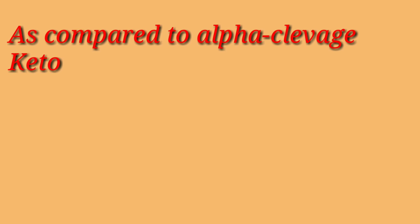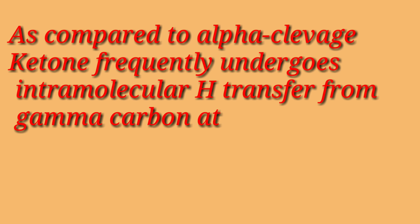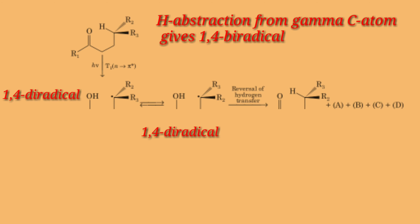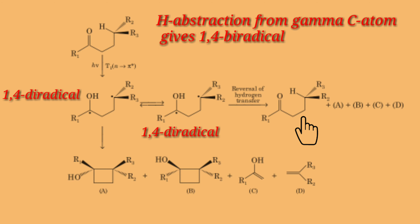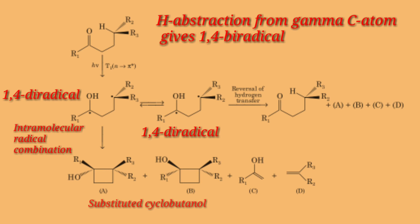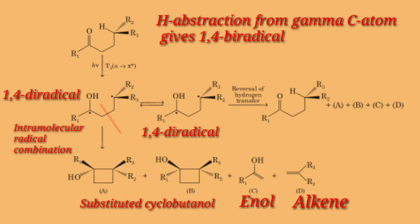As compared to alpha cleavage, ketones frequently undergo intramolecular hydrogen transfer from the gamma carbon atom to the carbonyl oxygen, leading to a 1,4-diradical. The 1,4-diradical reverts to starting ketone, undergoes intramolecular radical combination to form a substituted cyclobutanol, or the 1,4-diradical can undergo fragmentation of the alpha-beta carbon-carbon bond to give a methyl ketone via the enol and alkene formation. This process is known as the Norrish type 2 reaction.